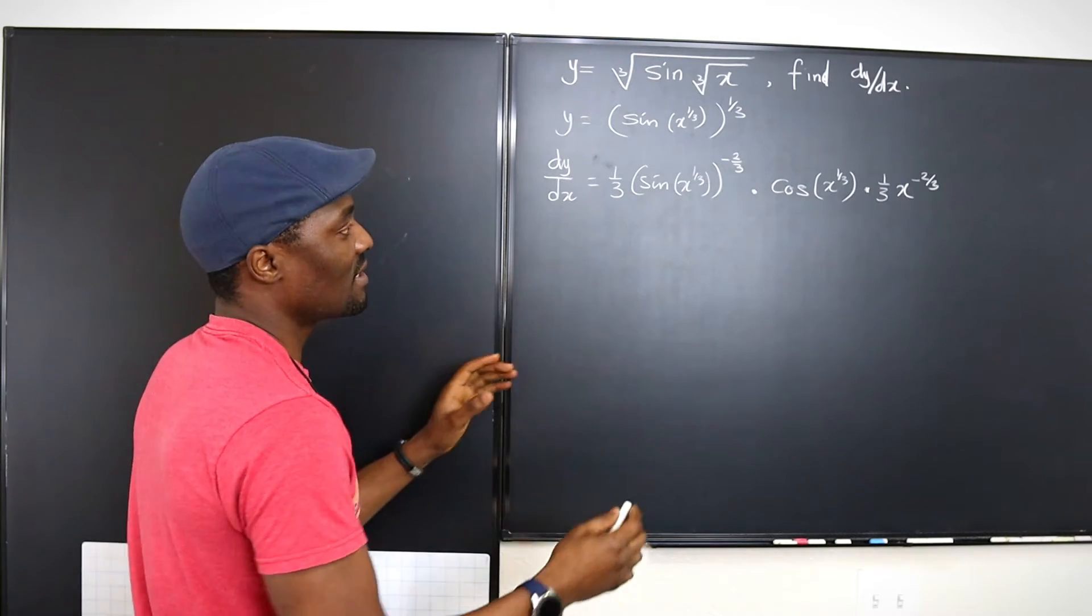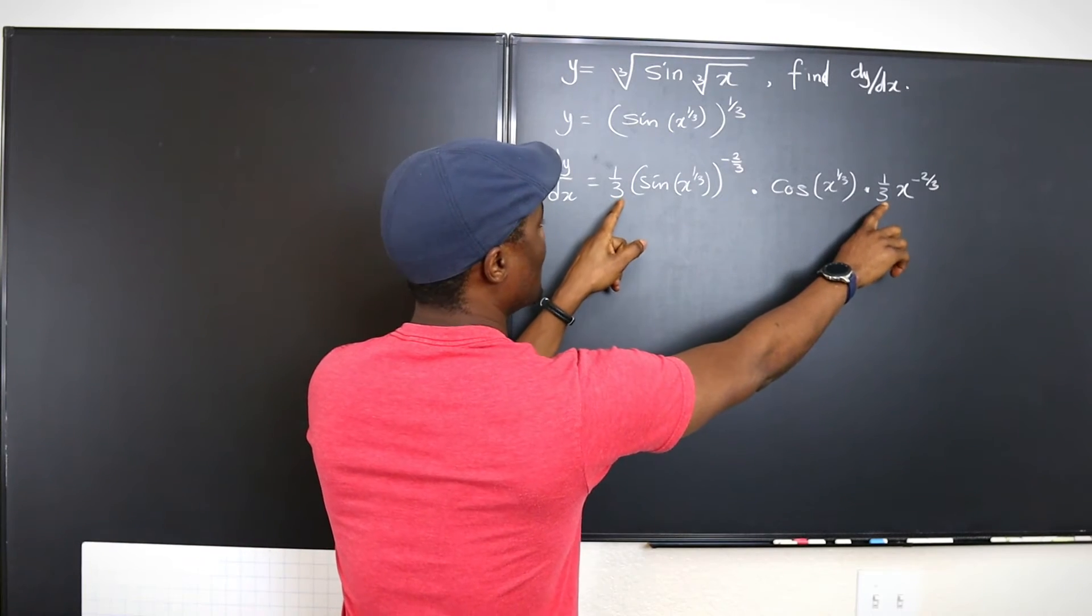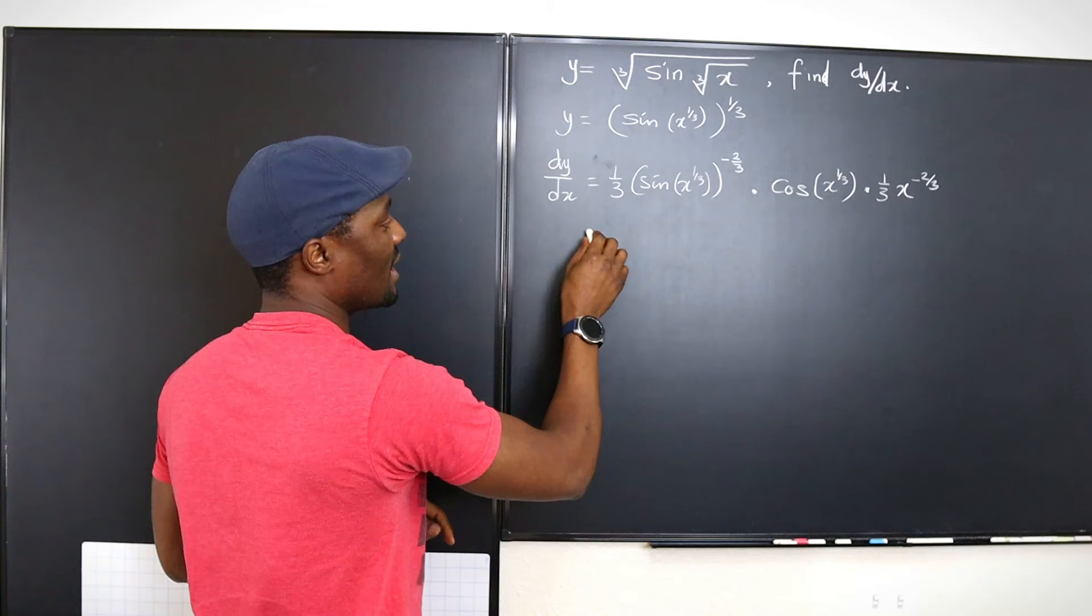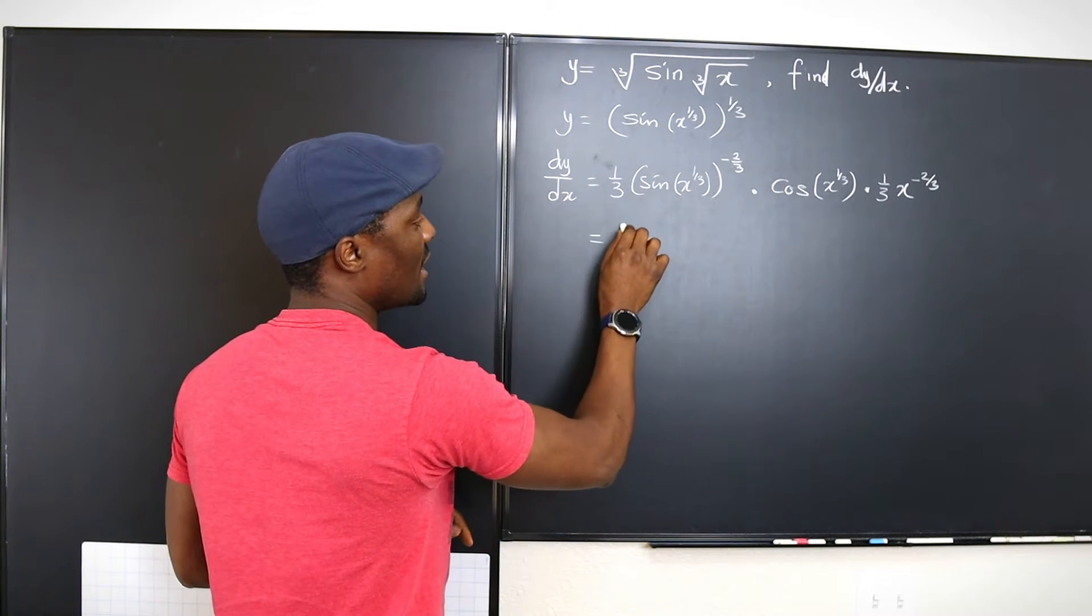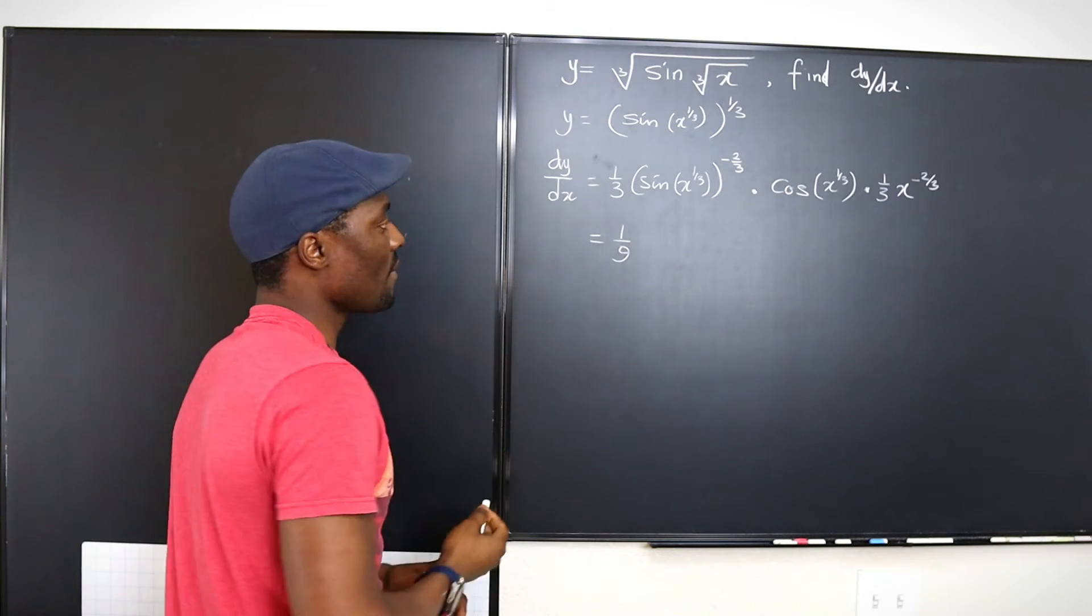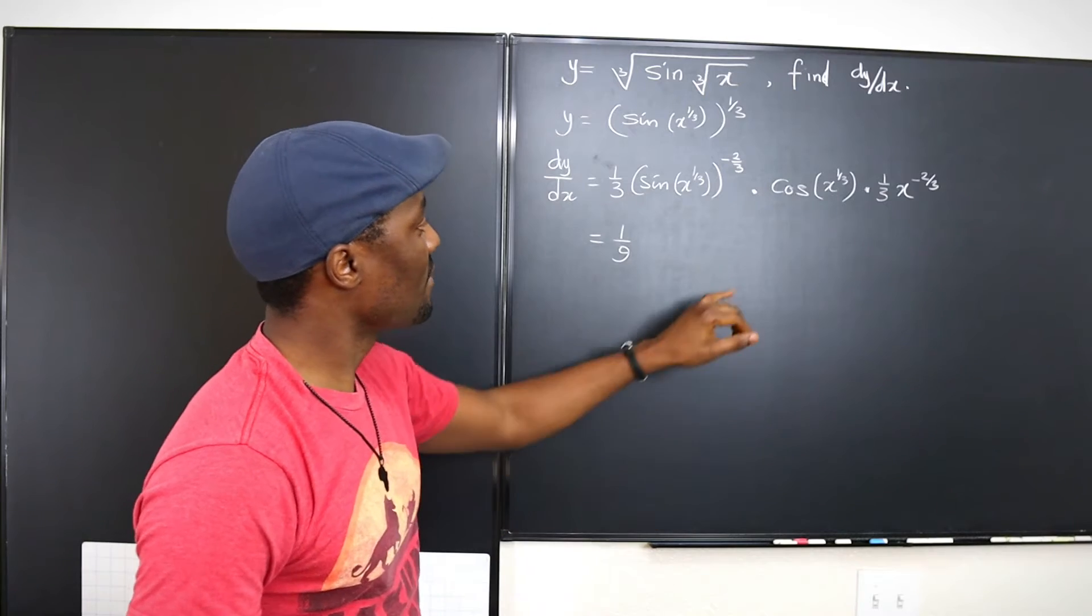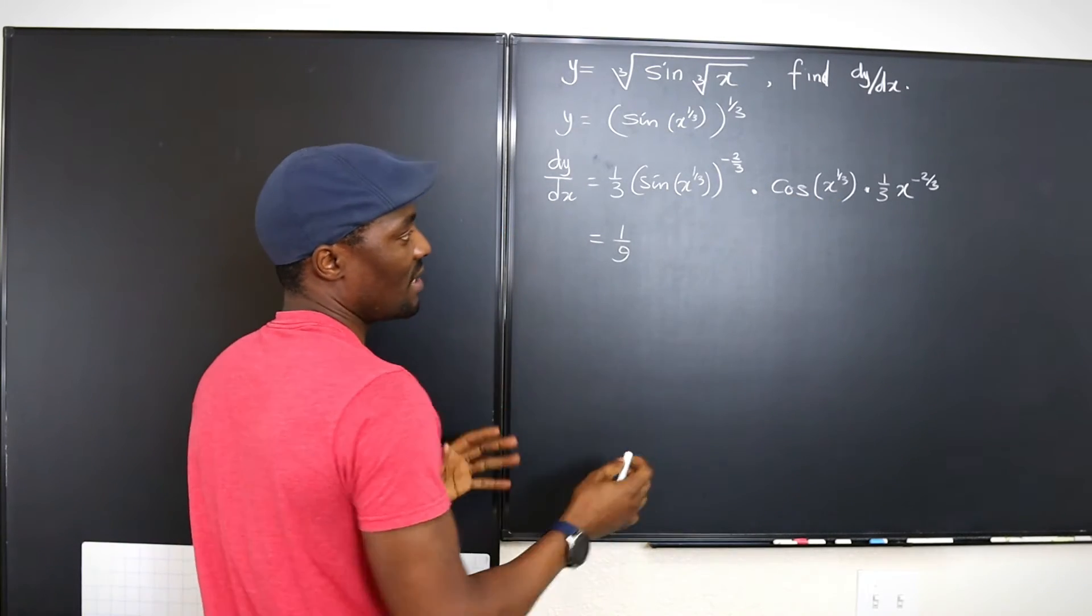The easiest thing for us to do is to take this here and multiply. That's going to give us one over nine. And then we're going to have the cosine of this that looks cleaner.